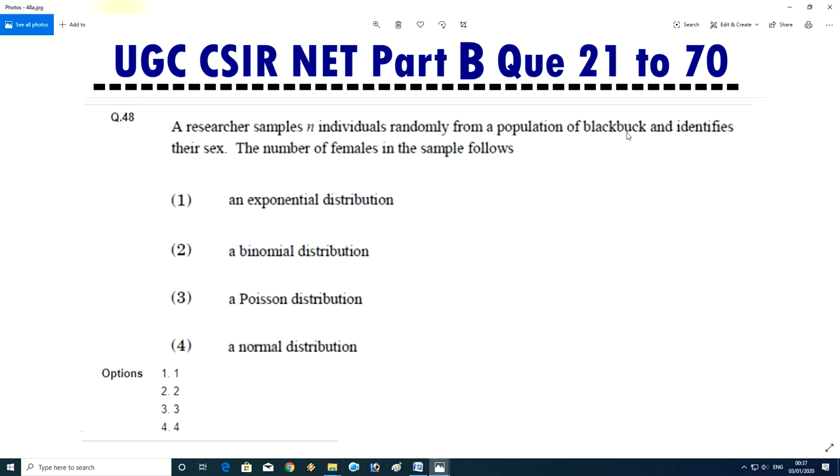Question No.49 - A researcher sampling individual randomly from population of black bugs and identifies their sex. The number of female in the sample follows an exponential distribution, binomial distribution, Poisson distribution, or normal distribution. Answer is B, binomial distribution.